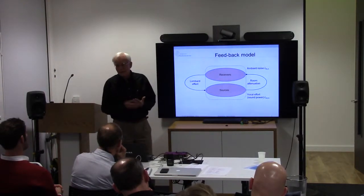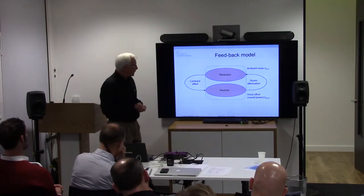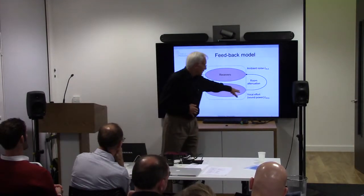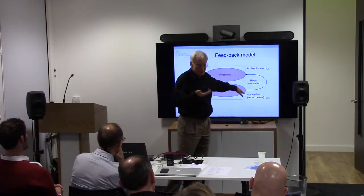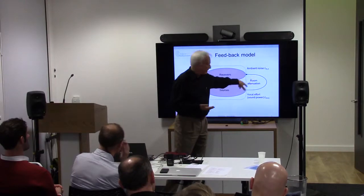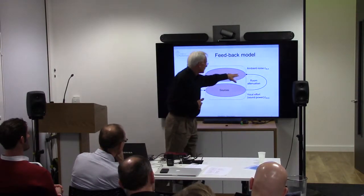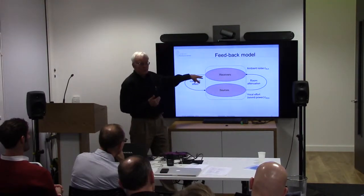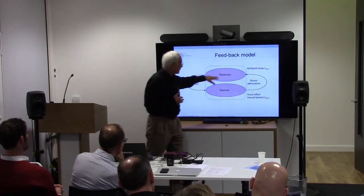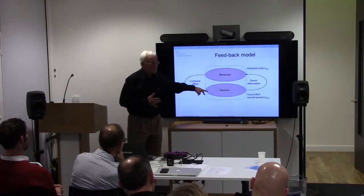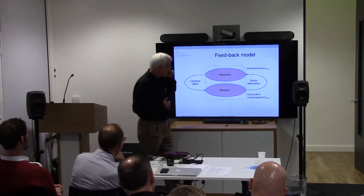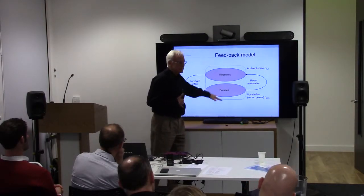The model can be explained as a kind of feedback model. We have a lot of people dining and talking — they are the sources. We have the vocal effort, the speech level, and we have some attenuation or amplification from the room. That means we are also a group of receivers experiencing this ambient noise level, which means that due to the Lombard effect, we may change the way we talk. The interesting thing is that the sources and receivers are the same people.